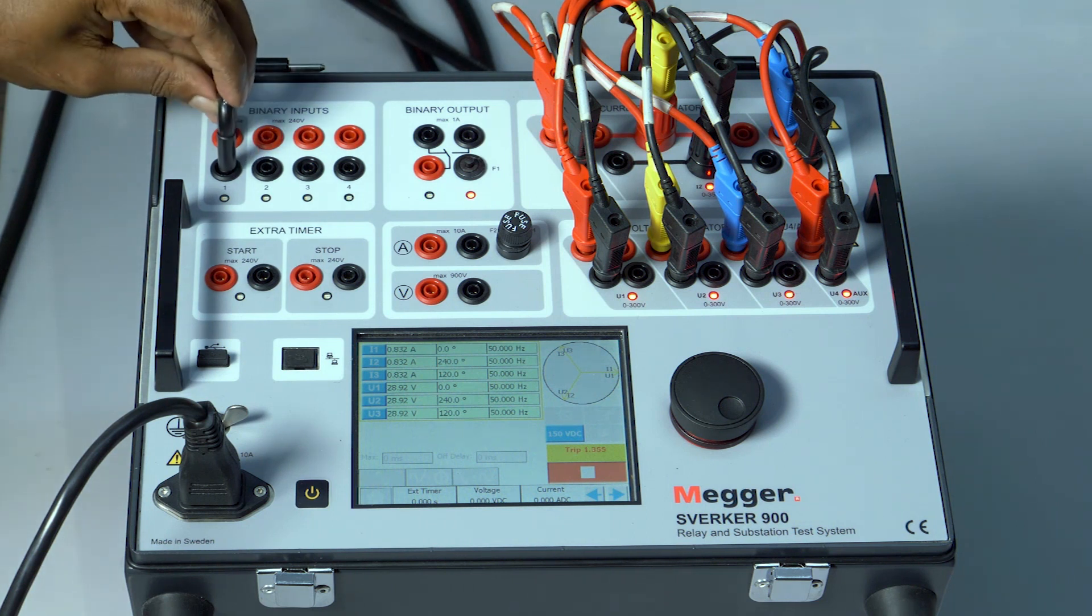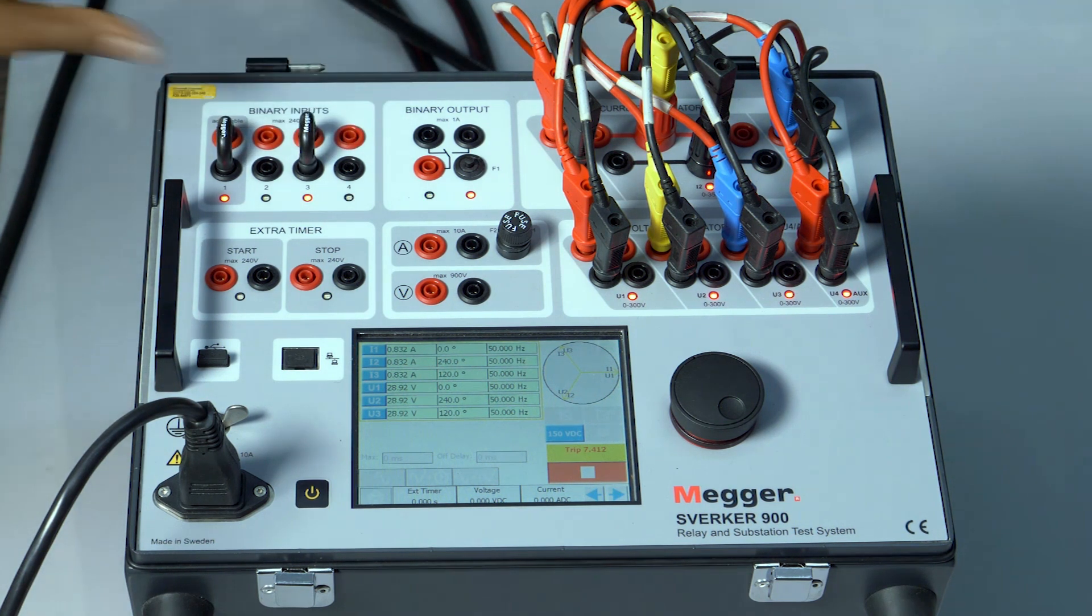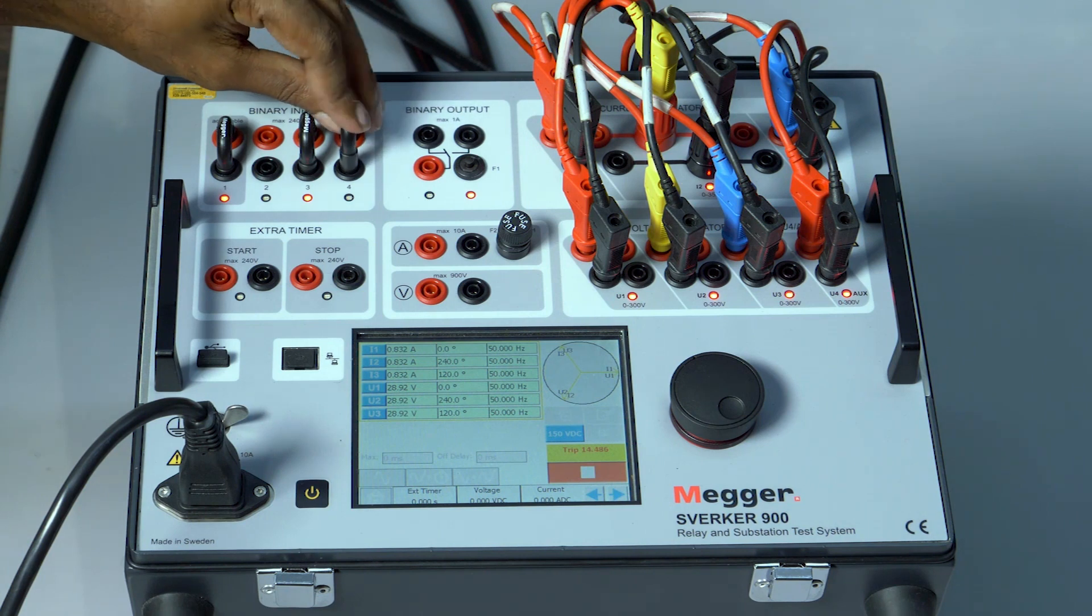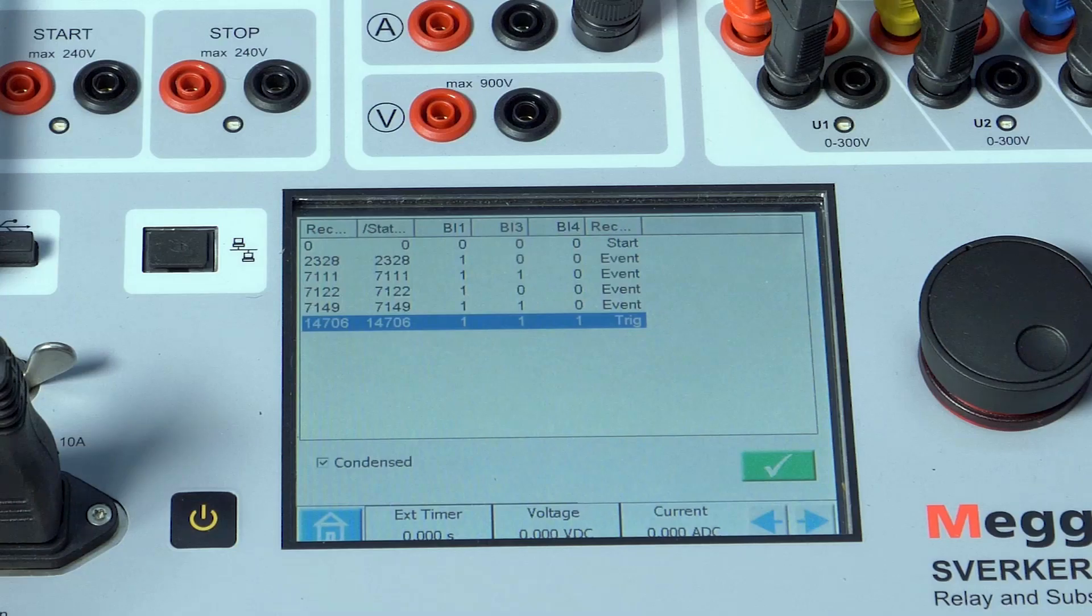Binary input 1 followed by binary input 3, now binary input 4. We can see that at the moment 4 is shortened, the AND logic between 1, 2, 3 is bypassed. However, the timing for binary input 1 and binary input 3 is recorded.